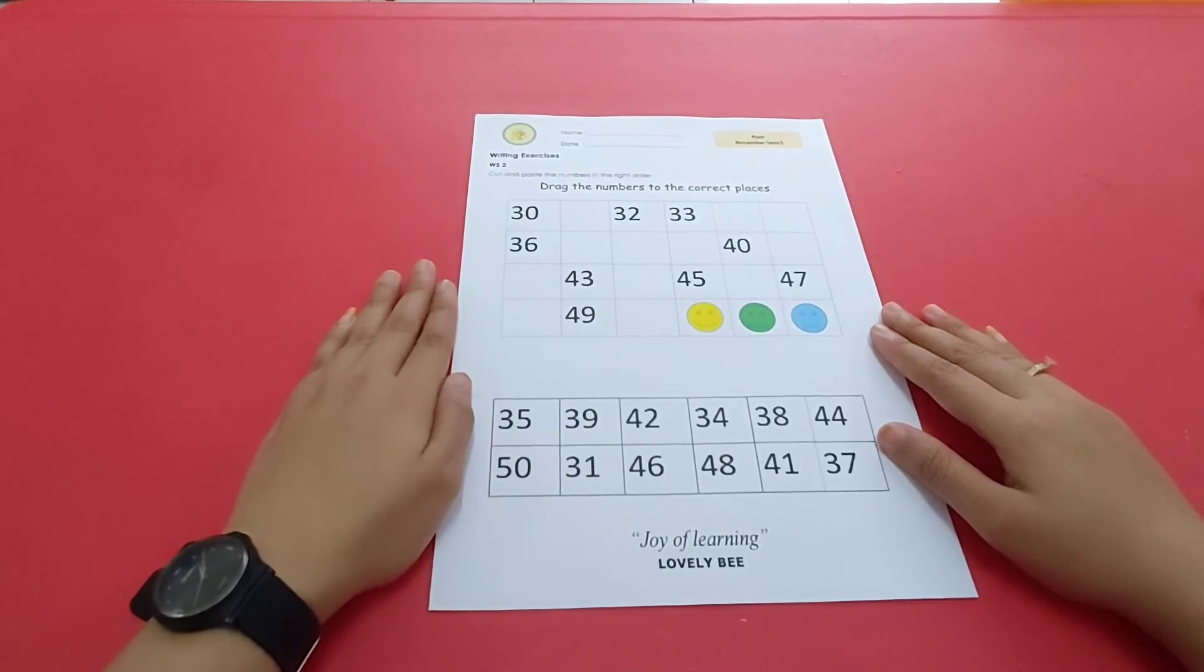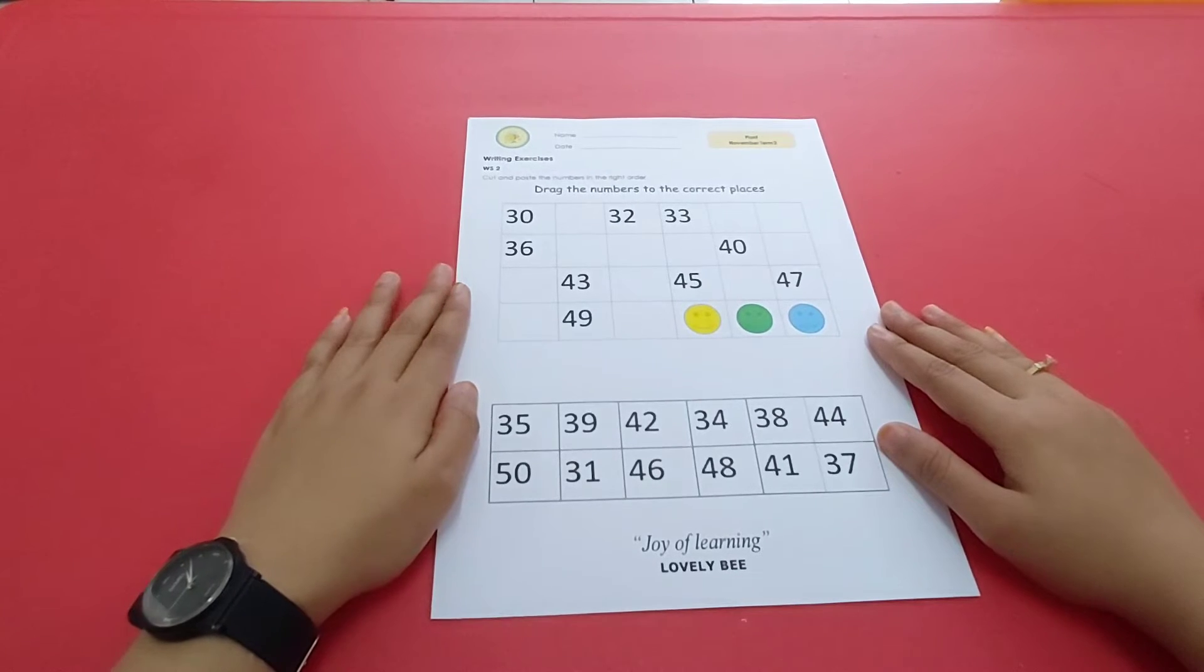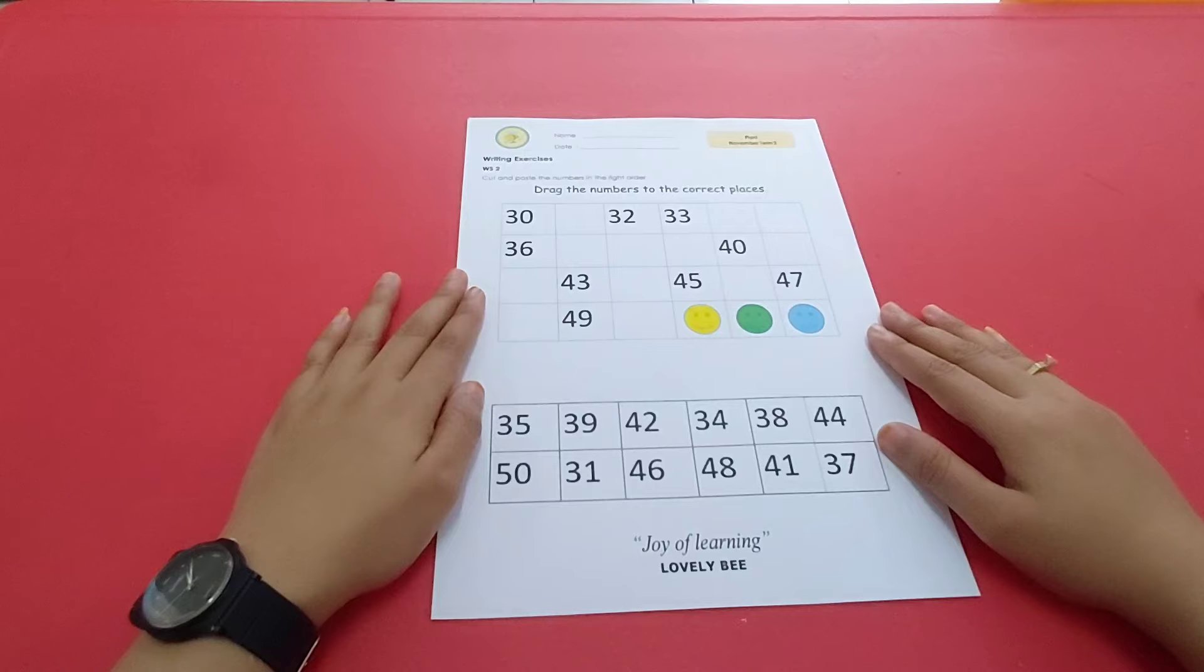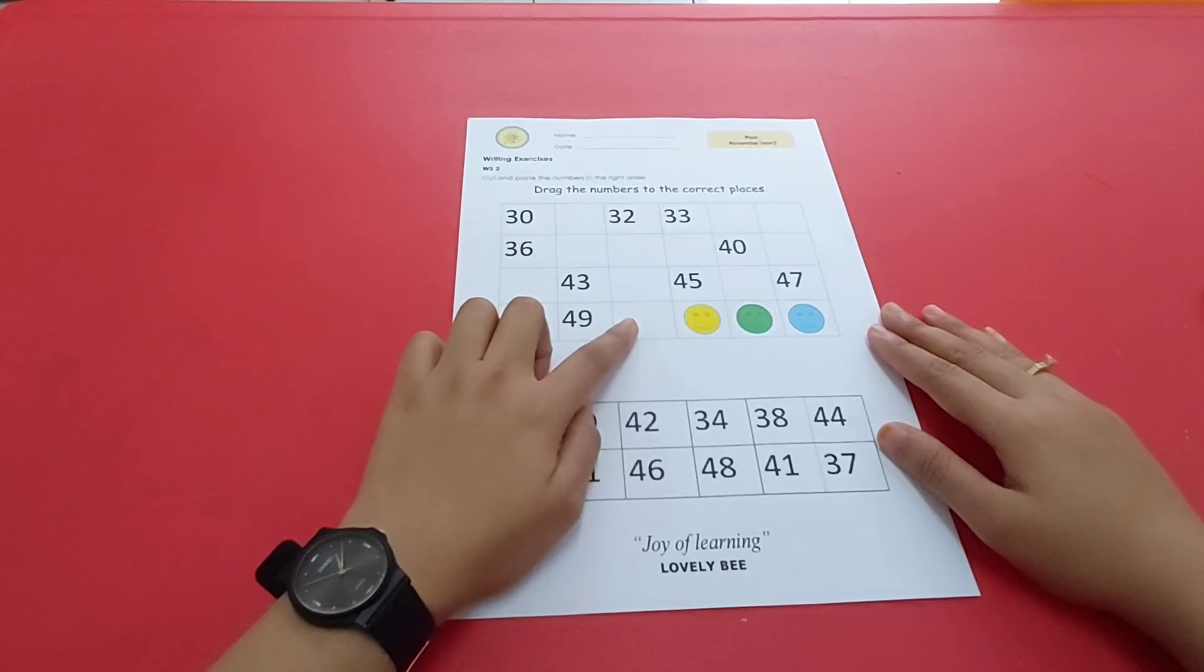Untuk pelajaran writing exercise hari ini, kita akan menggunting dan juga menempelkan angka secara berurutan, dari angka 30 sampai dengan 50.